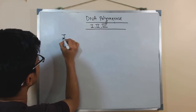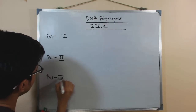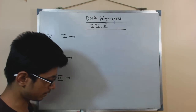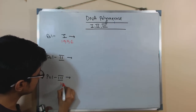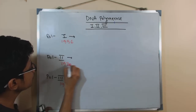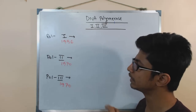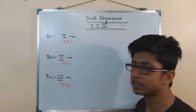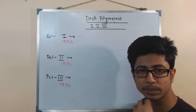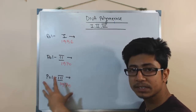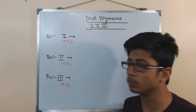Polymerase 1 was discovered pretty early by Arthur Kornberg in 1956. Polymerase 2 and polymerase 3 were both discovered later, in 1970. Initially, polymerase 1 was thought to be the main enzyme for DNA replication in E. coli, but after the discovery of polymerase 3, it was understood that the major DNA replication processing in bacteria is carried out by polymerase 3, while polymerase 1 and 2 are accessory polymerizing enzymes.